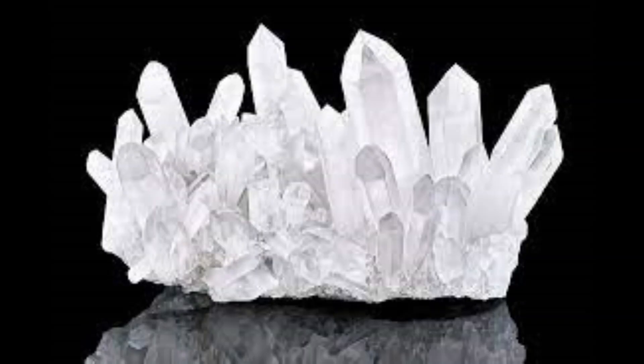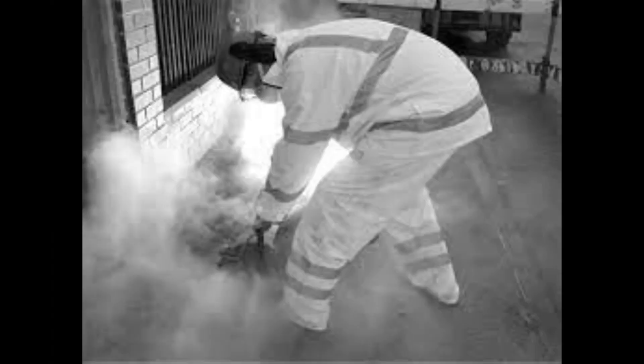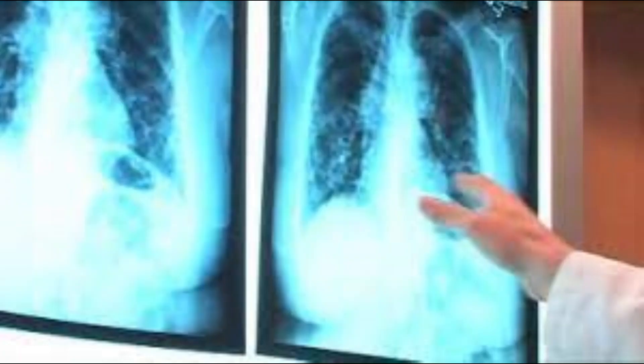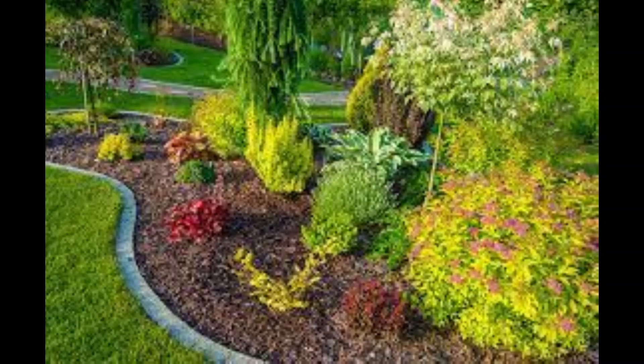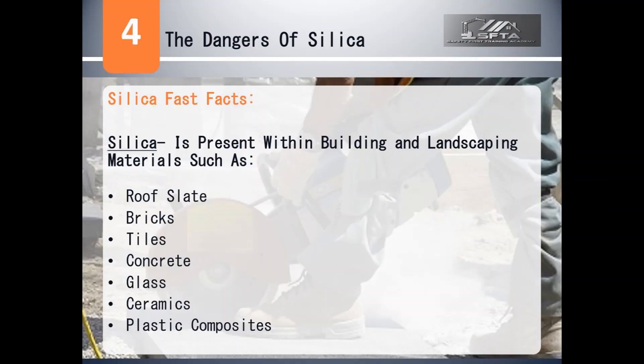Quartz is the most common form from which crystalline silica is derived. Quartz dust is known as respirable crystalline silica, meaning it can be taken into the body by merely breathing it in. Silica is present within building and landscaping materials such as roof slate, bricks, tiles, concrete, glass, ceramics, and plastic composites.